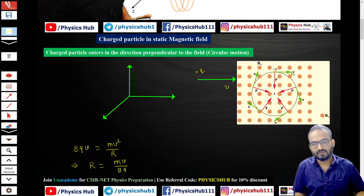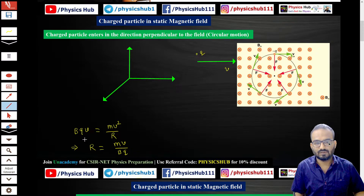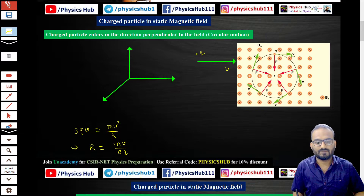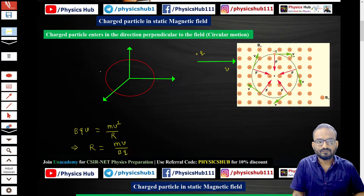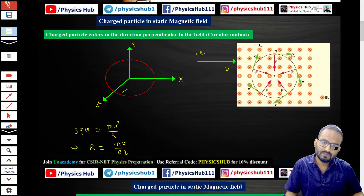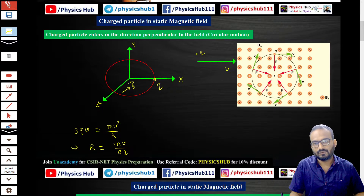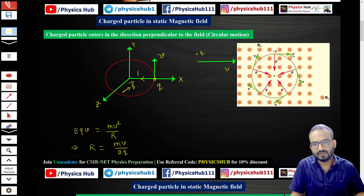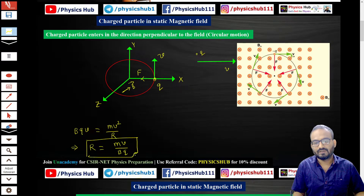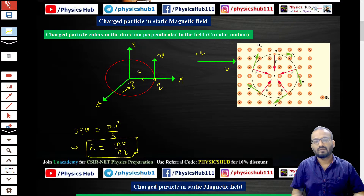The radius is r = mv/bq. Remember this result because we are going to use it later. So the scenario is: we have our x-axis, y-axis, and z-axis. The magnetic field is inward — along the negative z direction. The charge particle q has velocity v in a certain direction, a force F acts on it, giving us r = mv/bq. Whenever a charged particle enters a perpendicular magnetic field, it makes a circular trajectory.